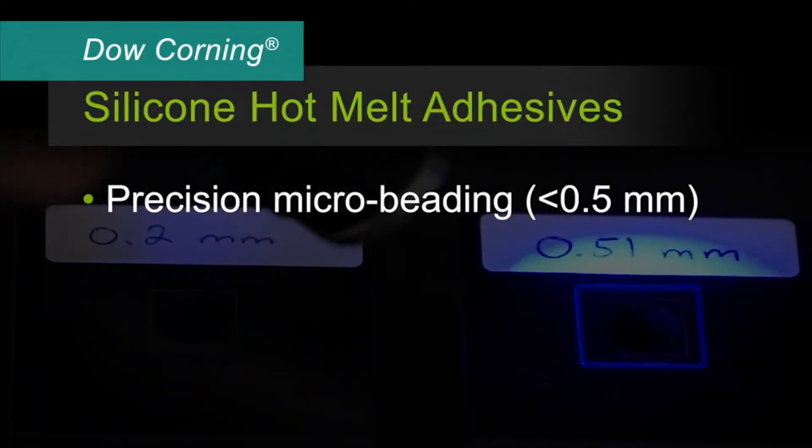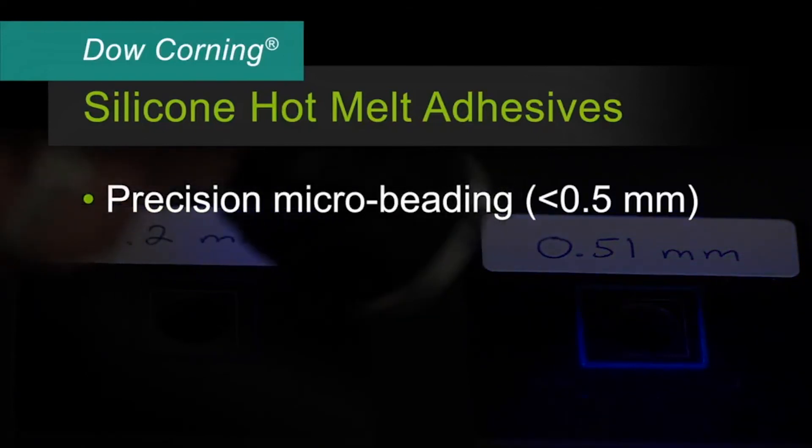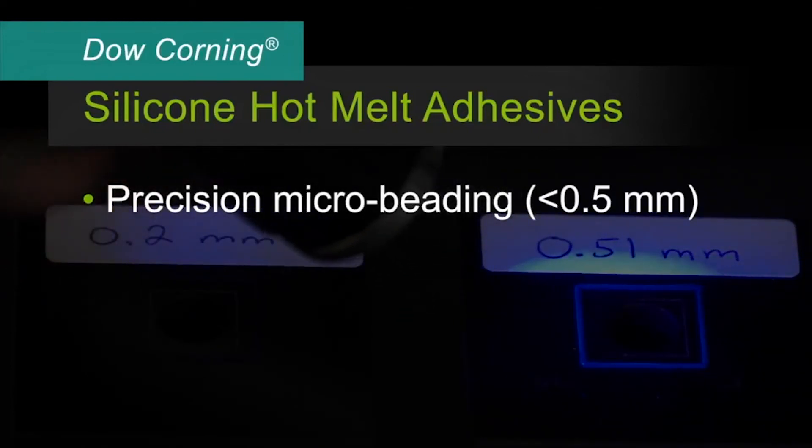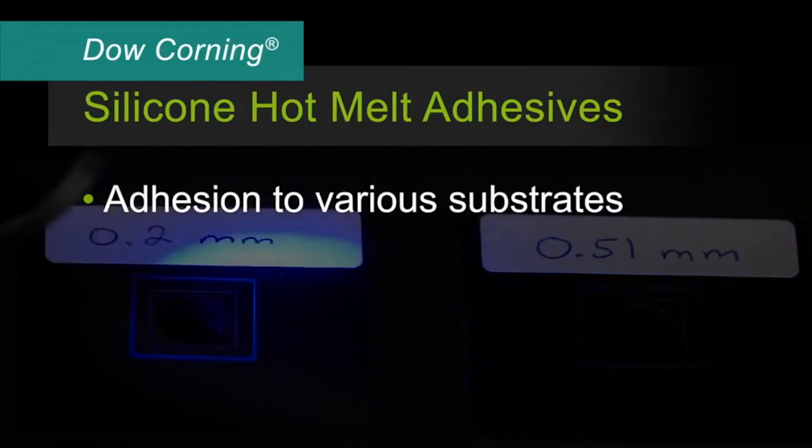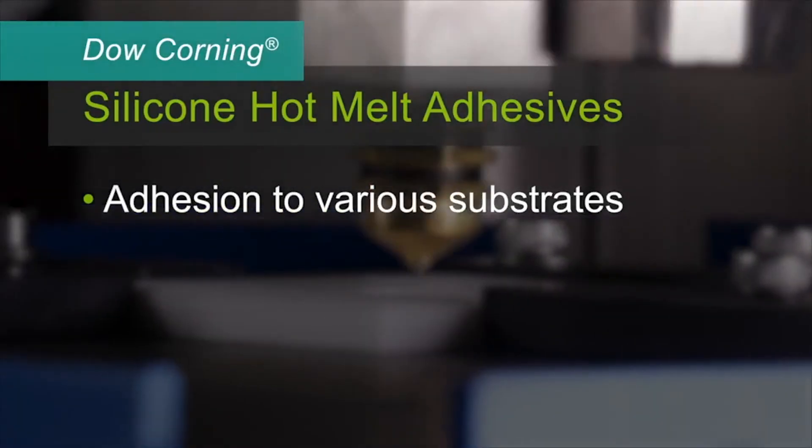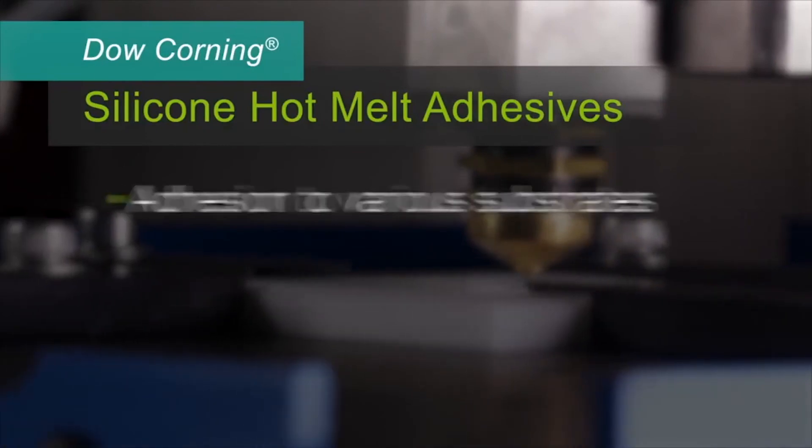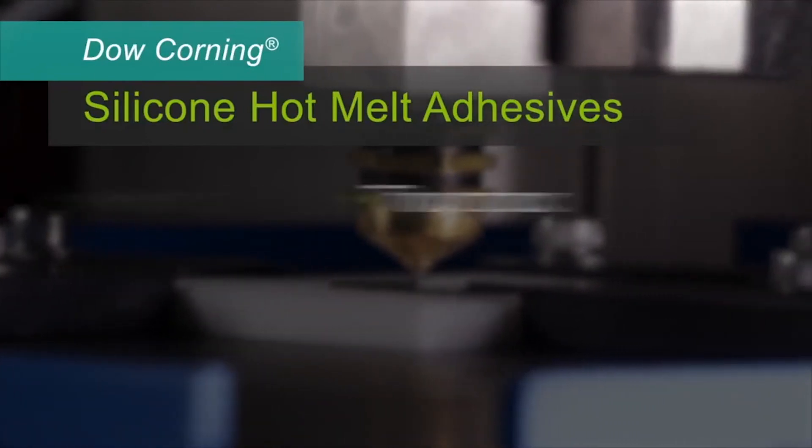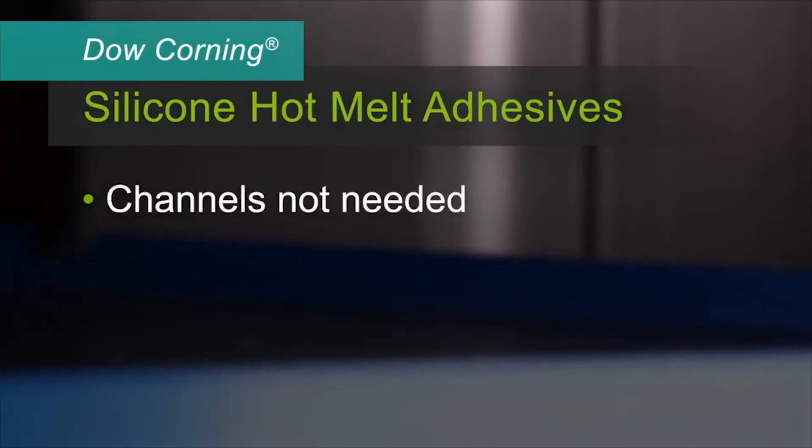Precision microbeating is possible with bead widths of less than half a millimeter achievable. Our adhesives are compatible with a variety of substrates. Unlike polyurethane hot melt, Dow Corning silicone hot melt adhesives are thixotropic, which minimizes squish out or the need for a channel design.